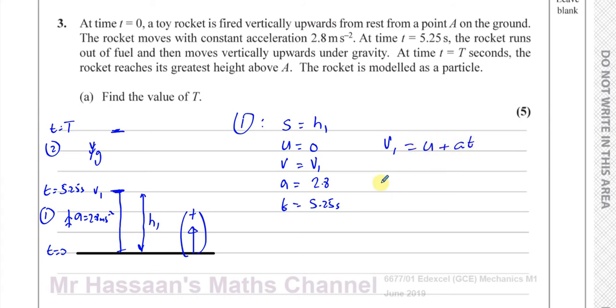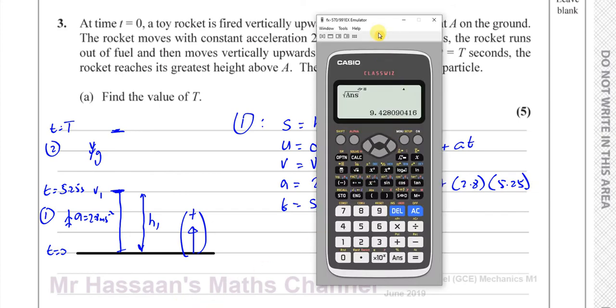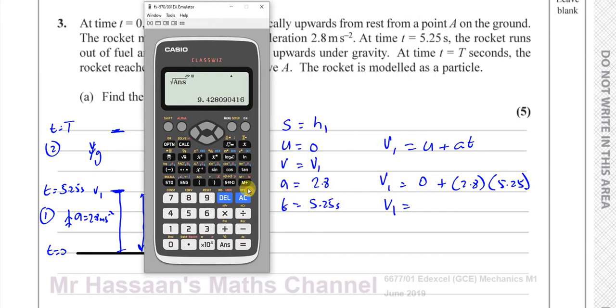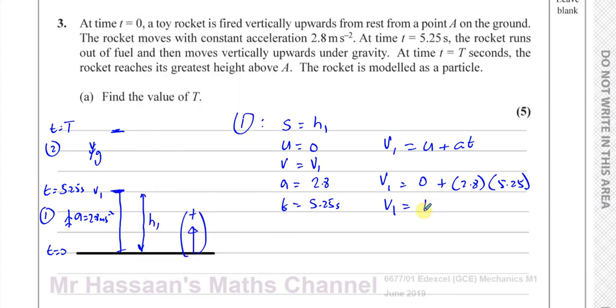We can use V equals U plus AT. That's probably the simplest way to do it. So that's going to be U, which is 0, plus A, which is 2.8, times 5.25. So that's going to give us the velocity at the point where it runs out of fuel. You've got 2.8 multiplied by 5.25, so that's 14.7 meters per second. So that's where it reaches at this point, 14.7 meters per second.